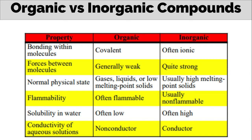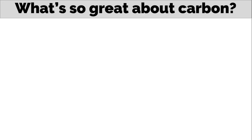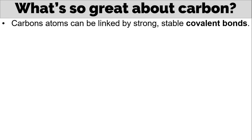Generally, ionic bonds are stronger than covalent bonds. So what's so great about carbon? Why do we have a course for carbon-containing compounds? First, carbon atoms can be linked by strong, stable covalent bonds.